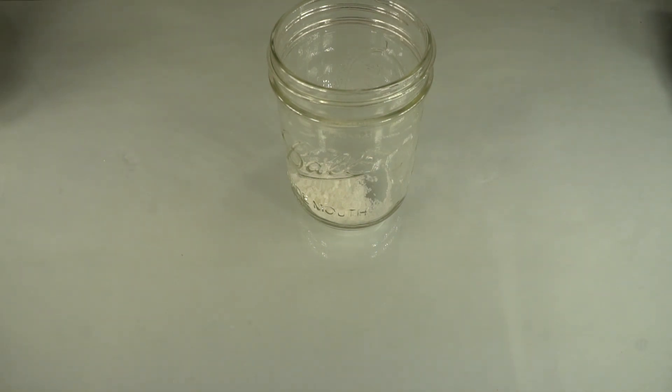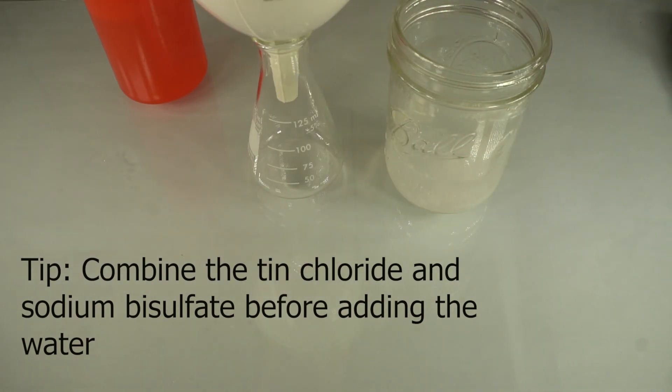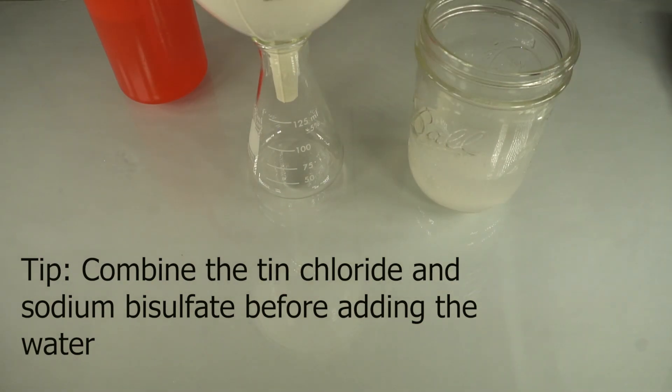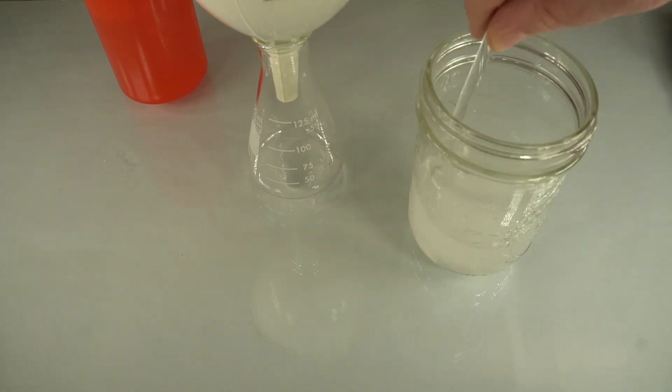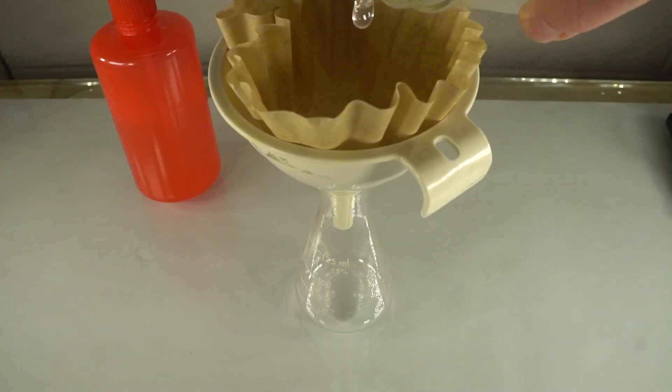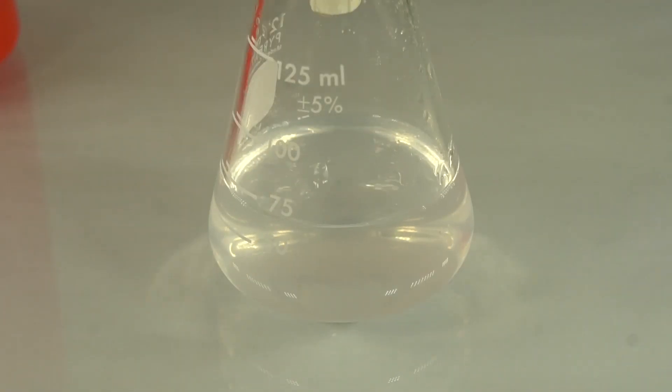Combine 12 grams of tin chloride, 6 grams of sodium bisulfate, and 125 grams of distilled water. Mix the solution until everything dissolves. It will be very cloudy. Filter the solution through a coffee filter to remove some of the particulates. The solution should be much clearer now.